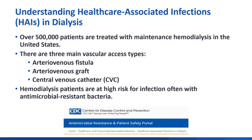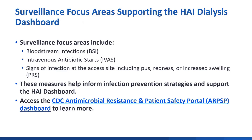These access methods, along with a potentially impaired immune system, may lead to an increased risk of infections. This portal focuses on surveillance of three event types: bloodstream infections, or BSIs; intravenous antibiotic starts, or IVAS; and signs of infection at the access site — pus, redness, and swelling, or PRS.